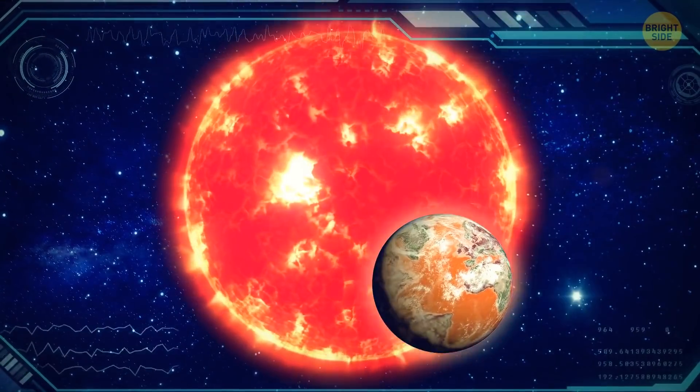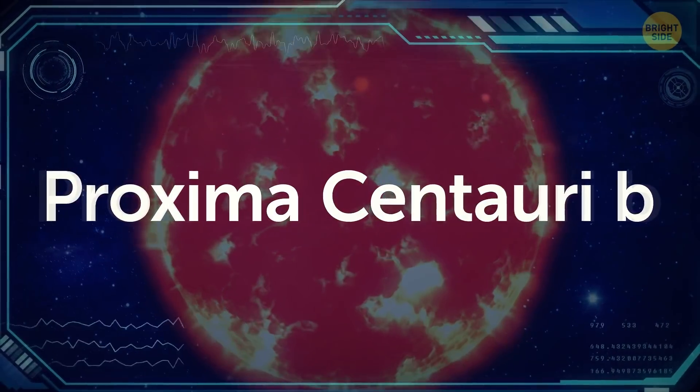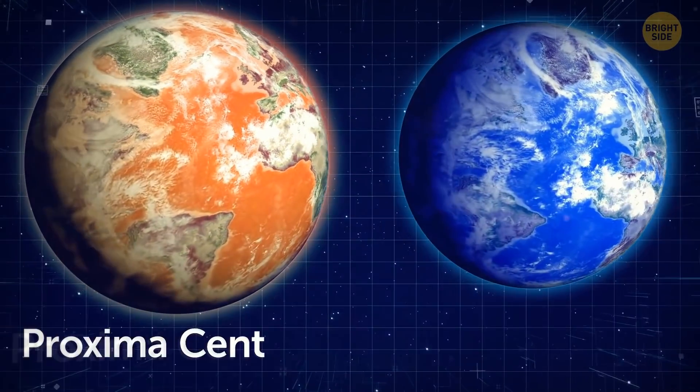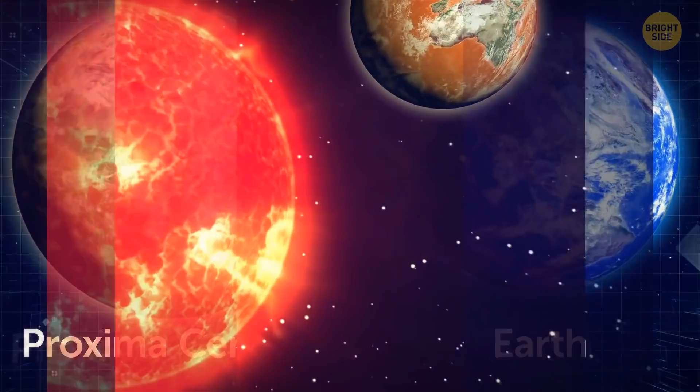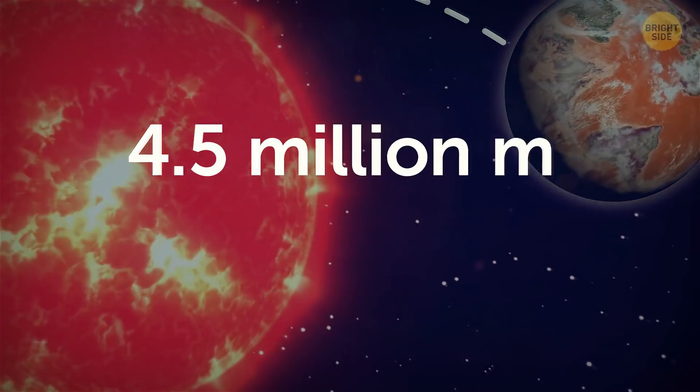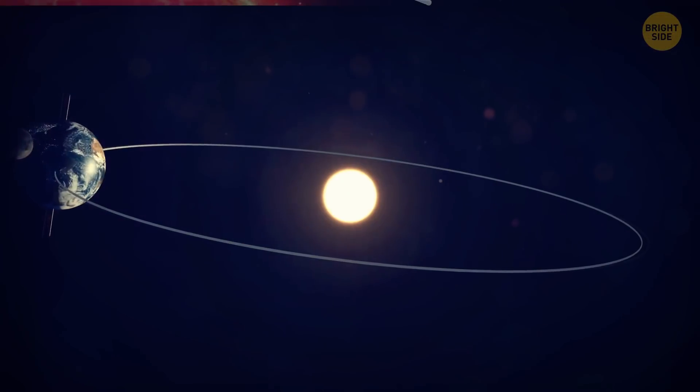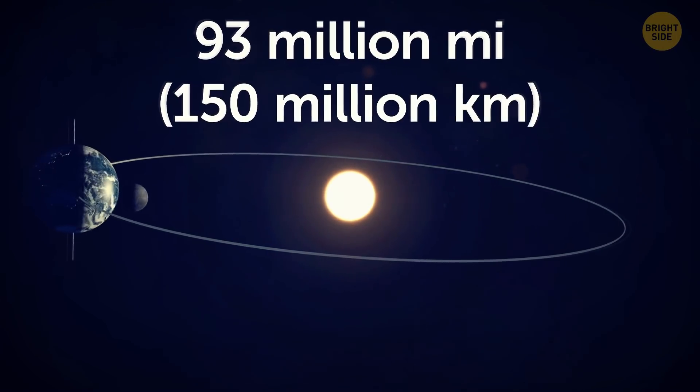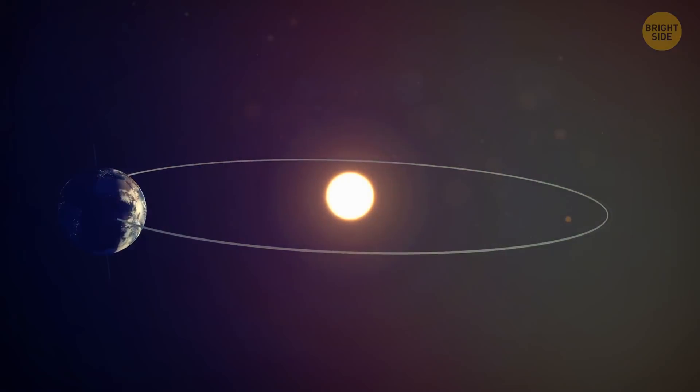It's not the star itself that interests us, it's the planet orbiting it. That's Proxima Centauri b. It's 17% bigger than Earth and about 10% heavier. It orbits its star at a distance of 4.5 million miles. By comparison, Earth is 93 million miles away from the Sun. That's 20 times farther.